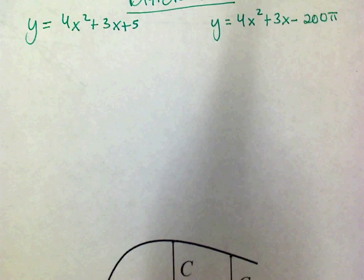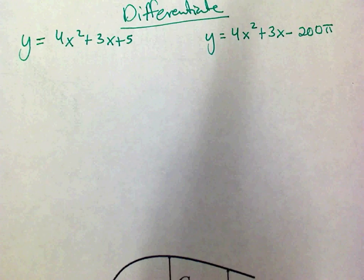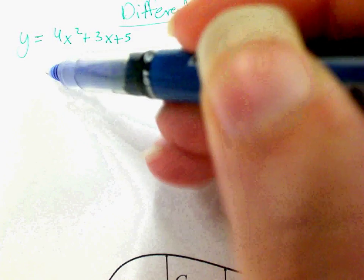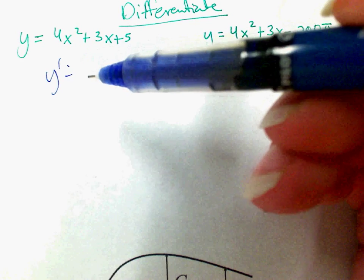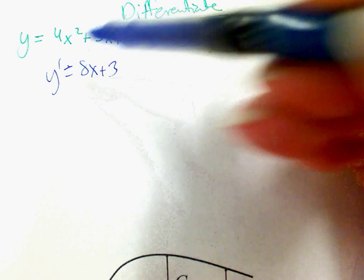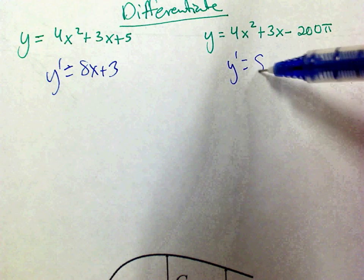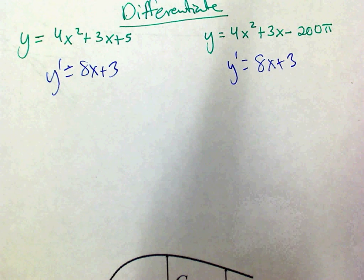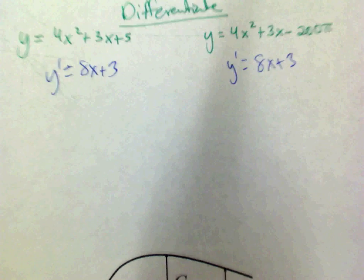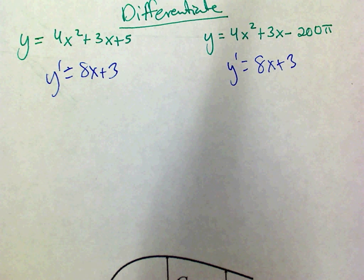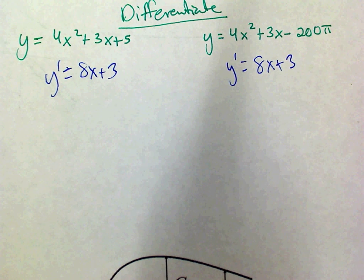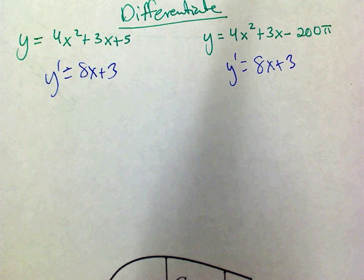All right, so what's the derivative of these two? What's y prime? 8x plus 3? What's y prime? 8x plus 3. Well, they're the same derivatives. Are those the same functions? No. But they have the same what? Which means, graphically, they have the same slope at every point.